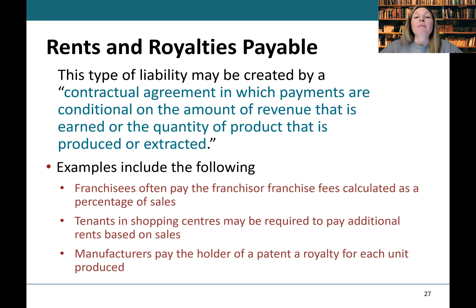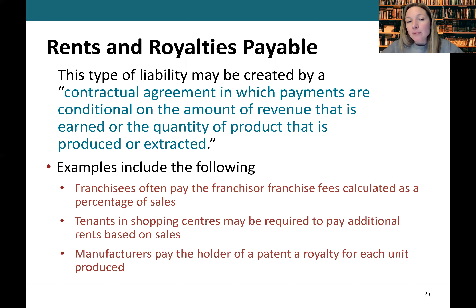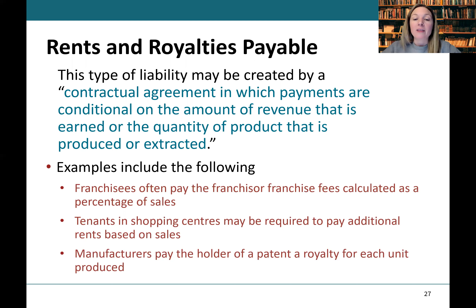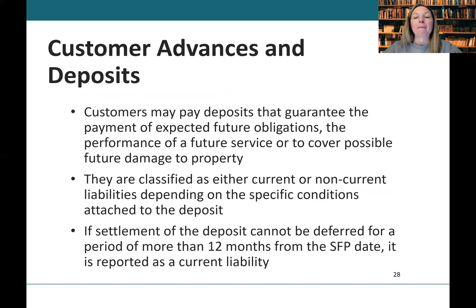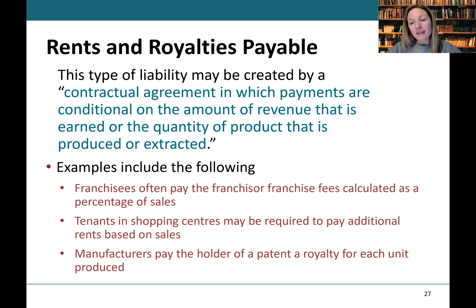Royalties and rents payable may be created by a contractual agreement in which payments are conditional on the amount of revenue earned or the quantity of product produced. Examples include a franchisee paying the franchisor a fee based on a percentage of sales, rent based on sales in the store, or manufacturers paying the holder of a patent a royalty for each item produced. In most situations this is a straightforward calculation — as long as you know the base, you can determine what the royalty payable would be.